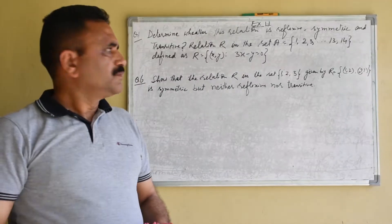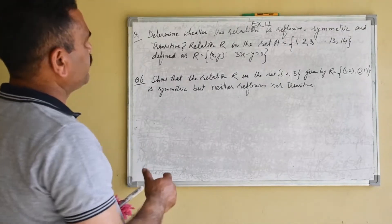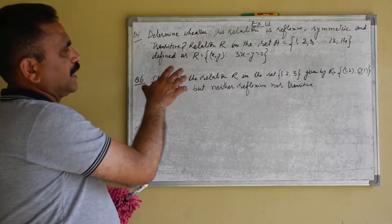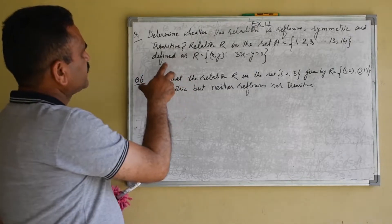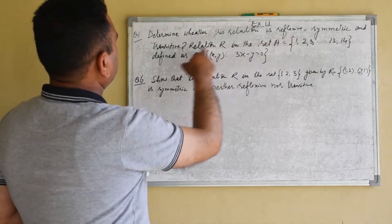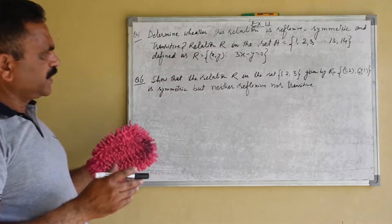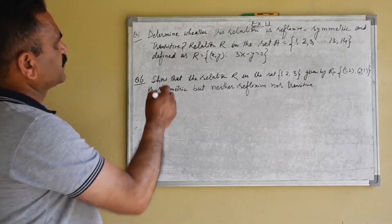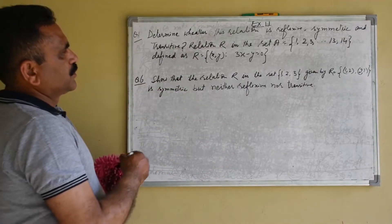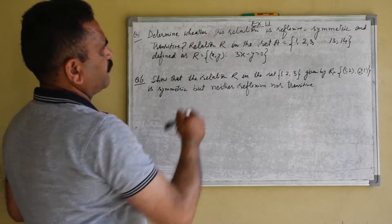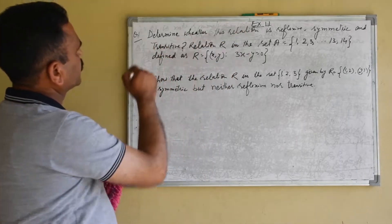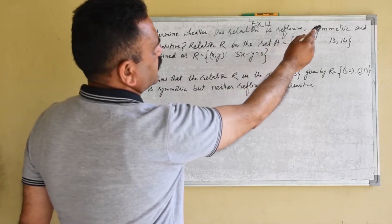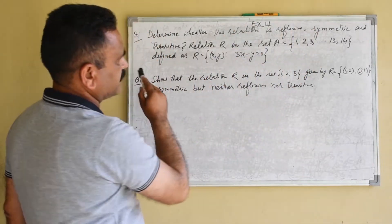Hello students, in the previous class we studied about types of relations, i.e. reflexive, symmetric, and transitive. So today we will solve a few problems based on the topic, i.e. types of relations. This is Exercise 1.1 from the NCERT book, first question: determine whether this relation is reflexive, symmetric, and transitive.